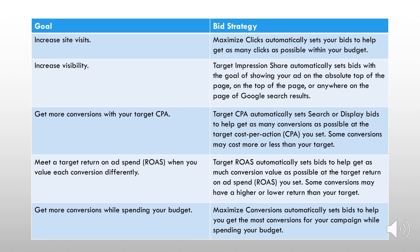But again, there's no guarantee. And these are expensive because Google has the control. These are automated bidding strategies, so Google will decide your bid. It can be low or high depending upon the auction and the competition — how much your competitors are willing to pay.